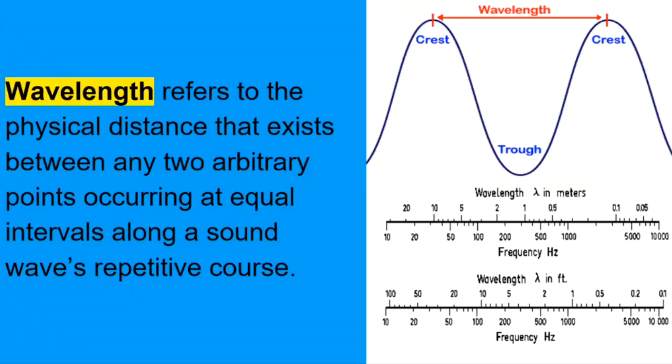This is the primary measurable component of sound. So wavelength refers to the physical distance that exists between any two arbitrary points occurring at equal intervals along a sound wave's repetitive course. This is what that means. Sound is emanating from its vibrating source in an ever-increasing orb. And the squeeze-together, pull-apart phenomenon is actually happening over space, like feet and inches or meters. It starts its compression and then it goes into rarefaction. And once it completes one of those little dances, it's covered some physical distance.